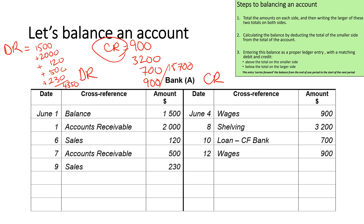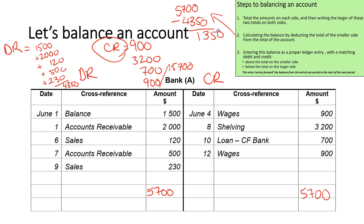The credit side is larger, so I'm going to write the larger amount on both sides — remember to leave a bit of room. I need to get the smaller side to equal 5,700, so I need to work out how much to add to the smaller side, which is the debit side. Taking 5,700 minus 4,350, I can see that I have 1,350 left. So in order to make my sides balance, I need to add it above the total on the smaller side and below the total on the larger side.